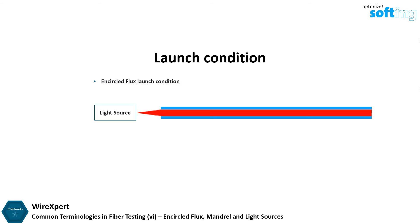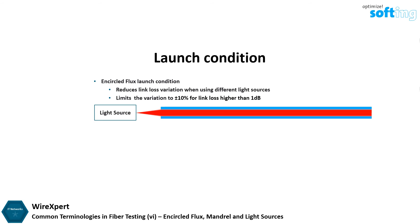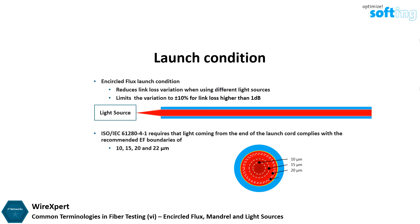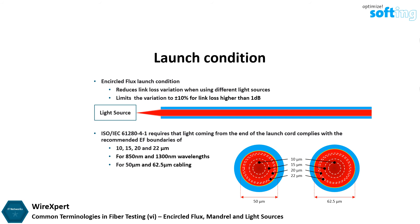An encircled flux launch condition reduces link loss variation when using different light sources, limiting the variation to plus or minus 10% for link loss higher than 1 dB. The ISO IEC 61280-4-1 requires that light coming from the end of the launch cord complies with the recommended EF boundaries of 10, 15, 20, and 22 microns for 850 nm and 1300 nm wavelengths, for both 50 micron and 62.5 micron cabling.